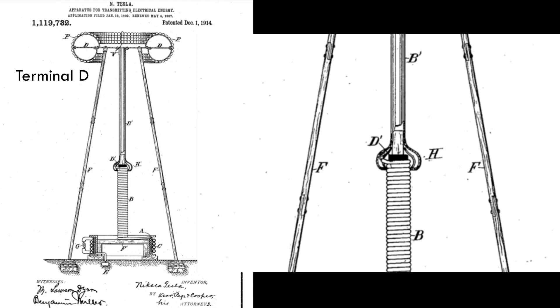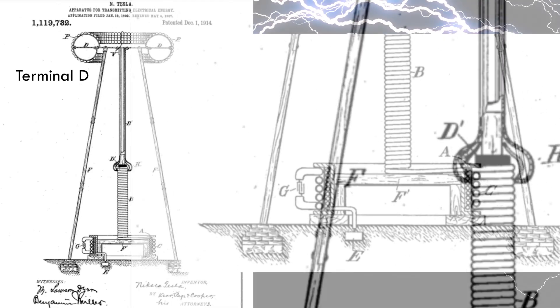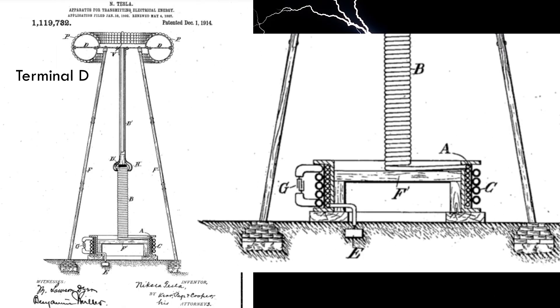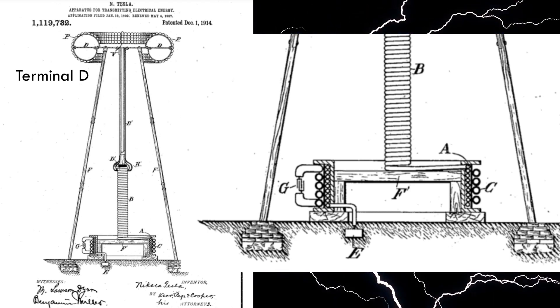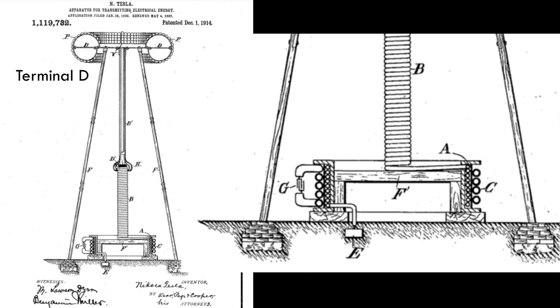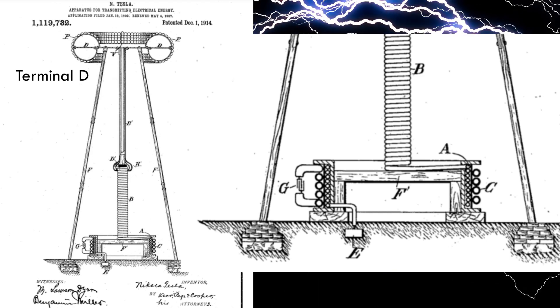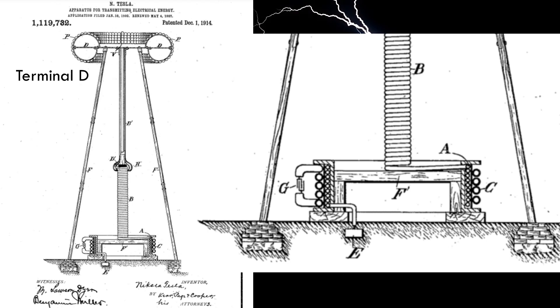The lower end of the coil B, which, if desired, may be extended up to the terminal D, should be somewhat below the uppermost turn of coil A. This, I find, lessens the tendency of the charge to break out from the wire connecting both ends to pass along the support F'.